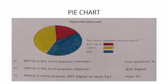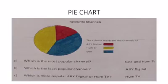The third type of graph is known as a pie chart. In this graph, percentages of different channels are shown by the colored area of each sector. Blue color shows Jio TV, yellow color shows Hum TV, and red color shows ARY Digital.